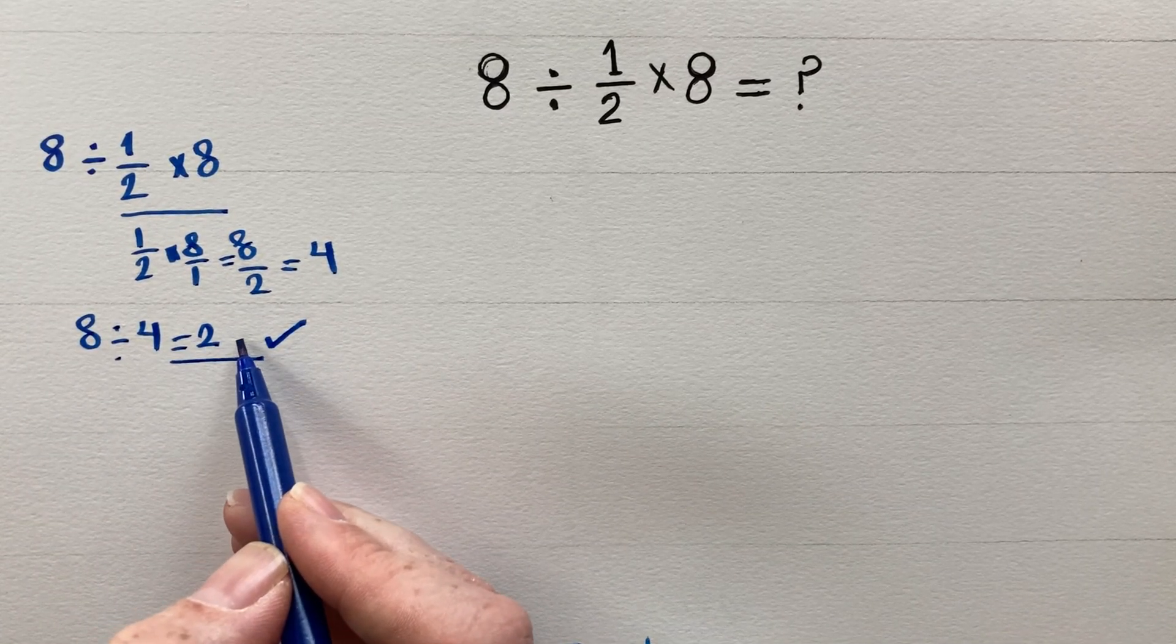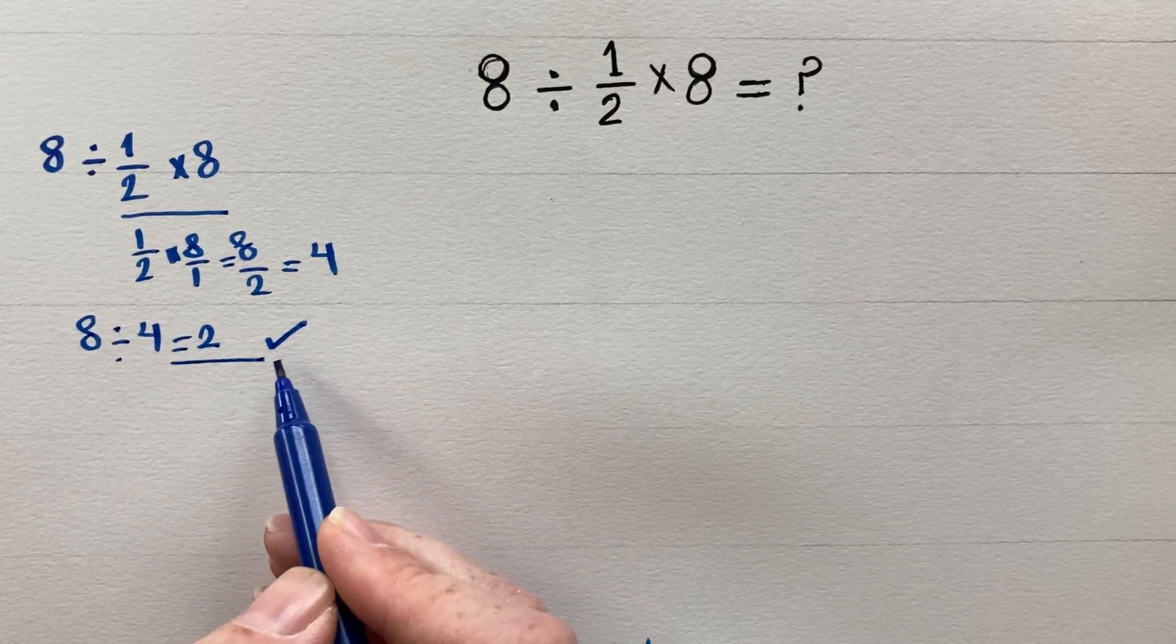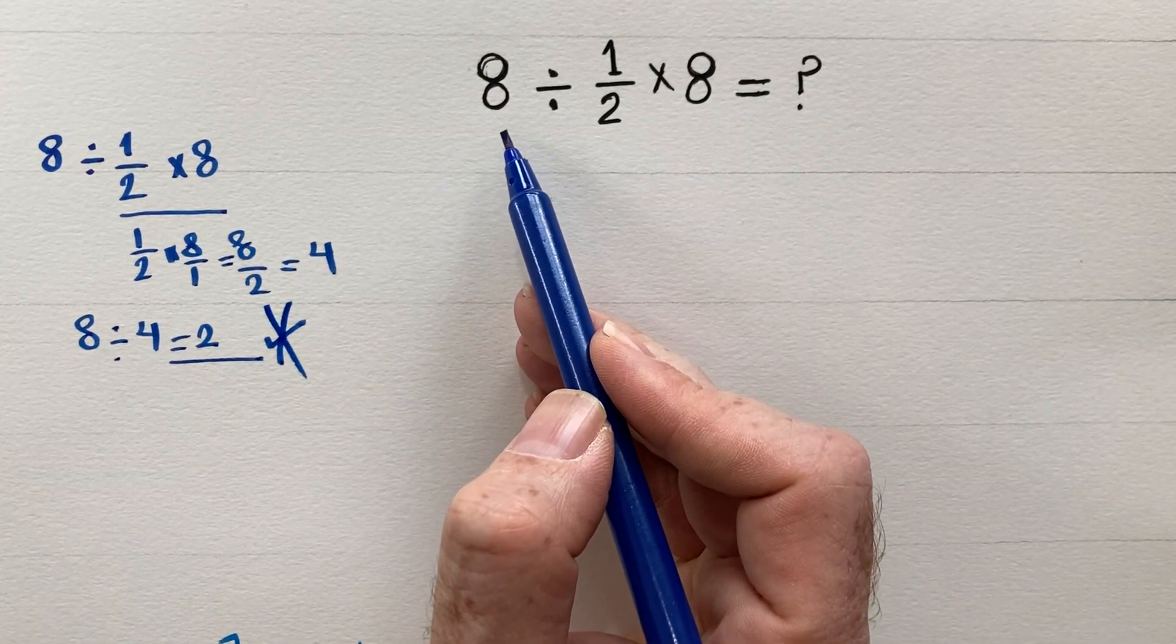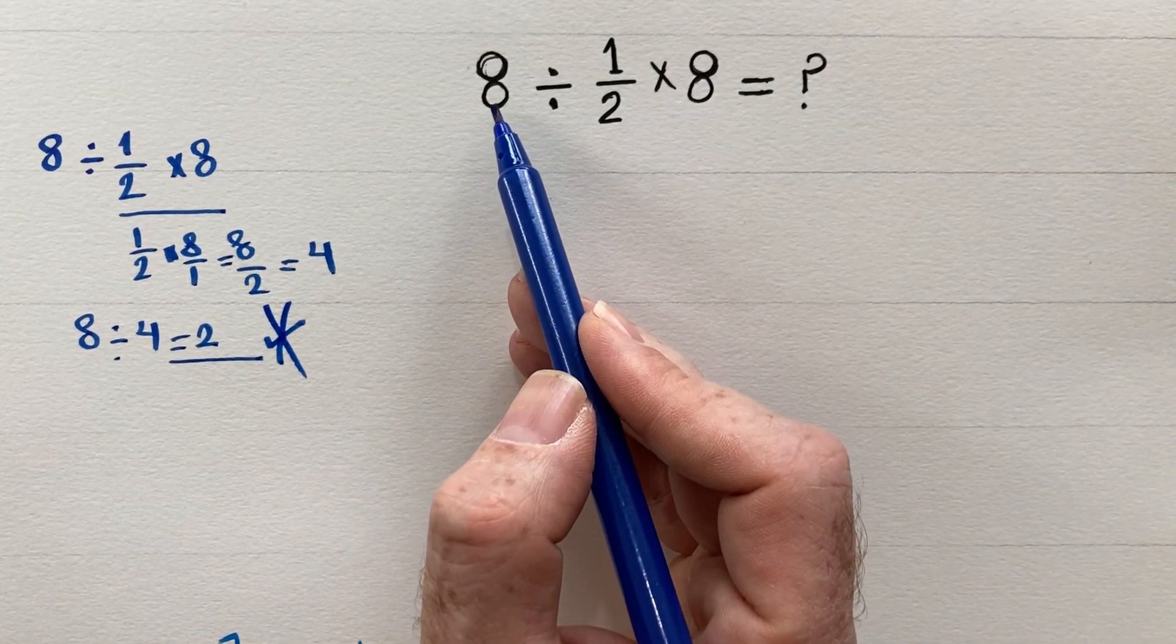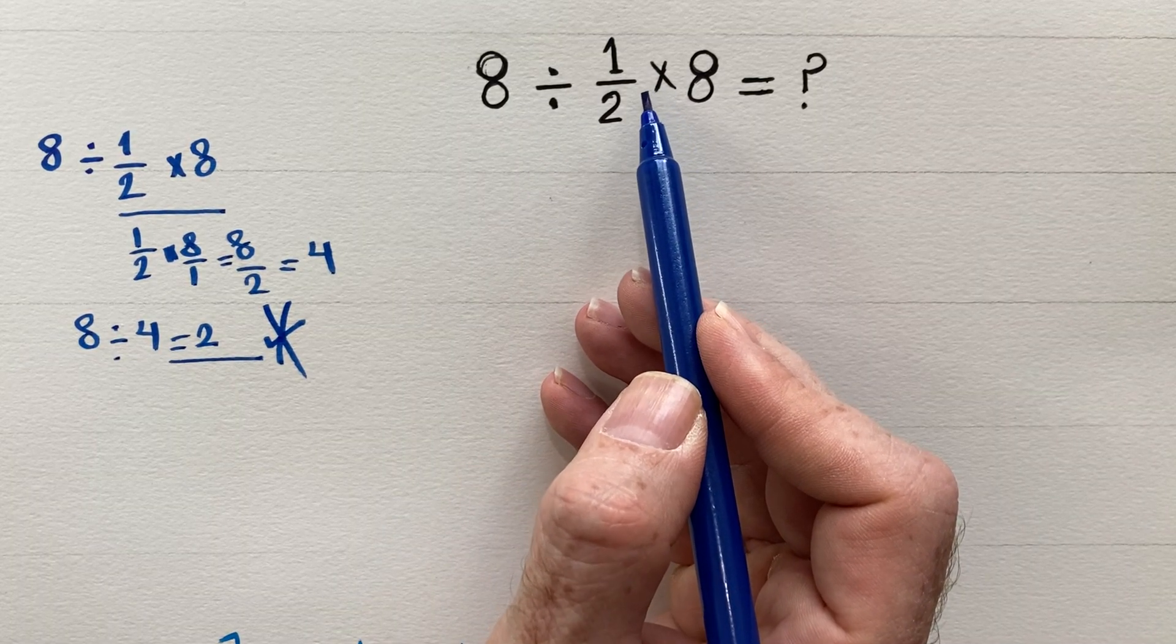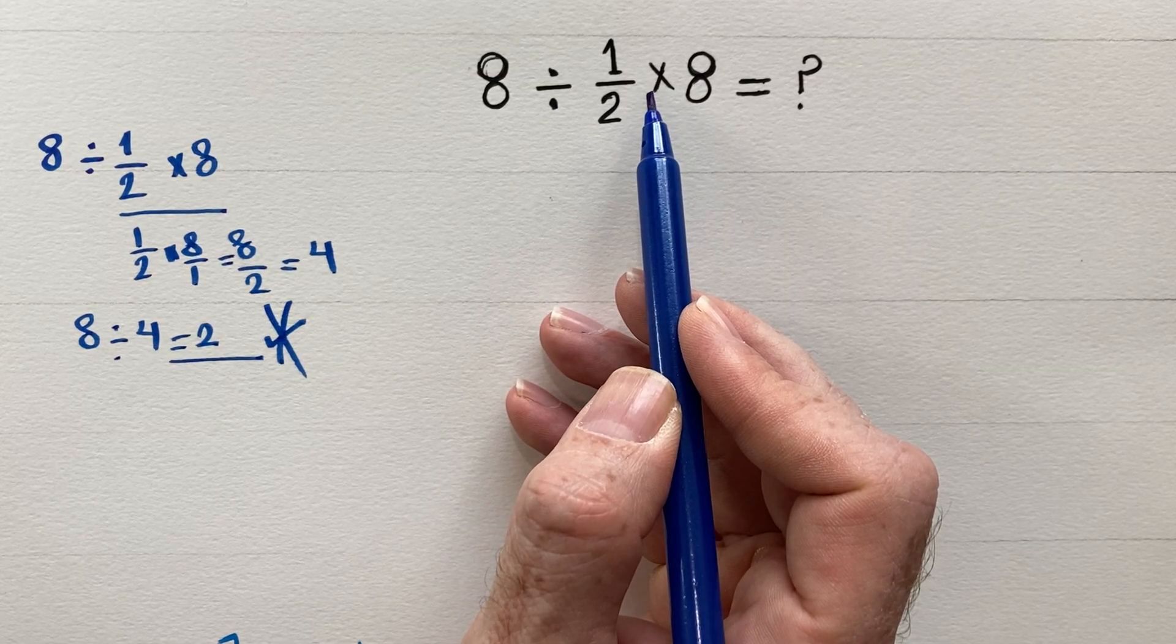If you looked at this problem and thought the answer is 2, actually you are wrong. Why? Based on the order of operations, multiplication and division share the same level. When you see both multiplication and division in an equation, you